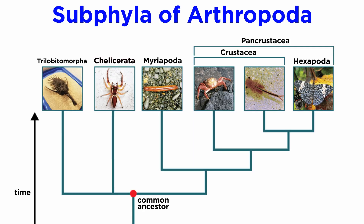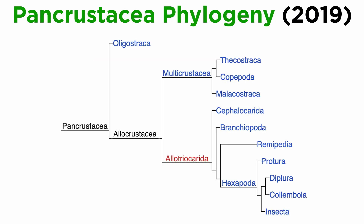Continuing with our analysis of Arthropoda, the exact phylogeny of Pancrustacea is still contested. The most recent phylogeny, proposed in 2019, places two superclasses under Pancrustacea: Oligostraca and Allocrustacea. Allocrustacea contains Multicrustacea and Allotriocarida, which also includes the hexapod insects. There are many other proposed phylogenies for Pancrustacea, but this is the most recent.